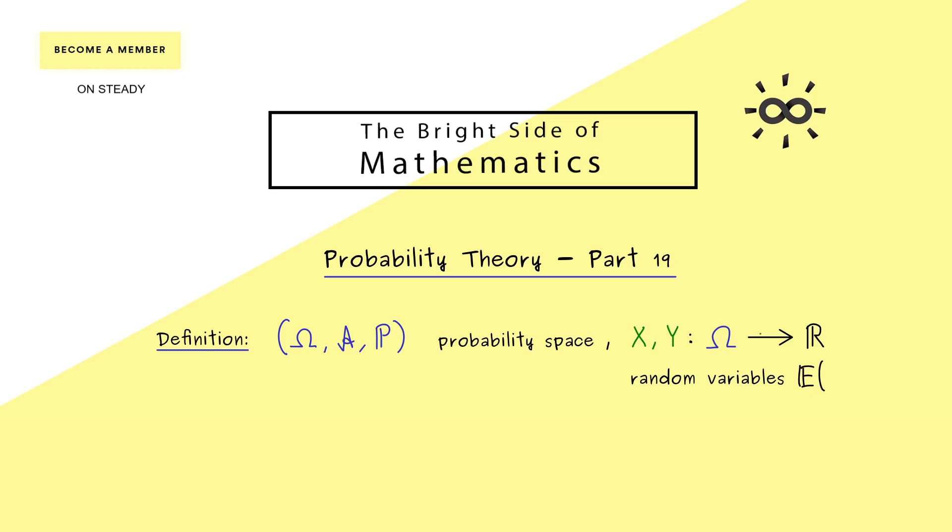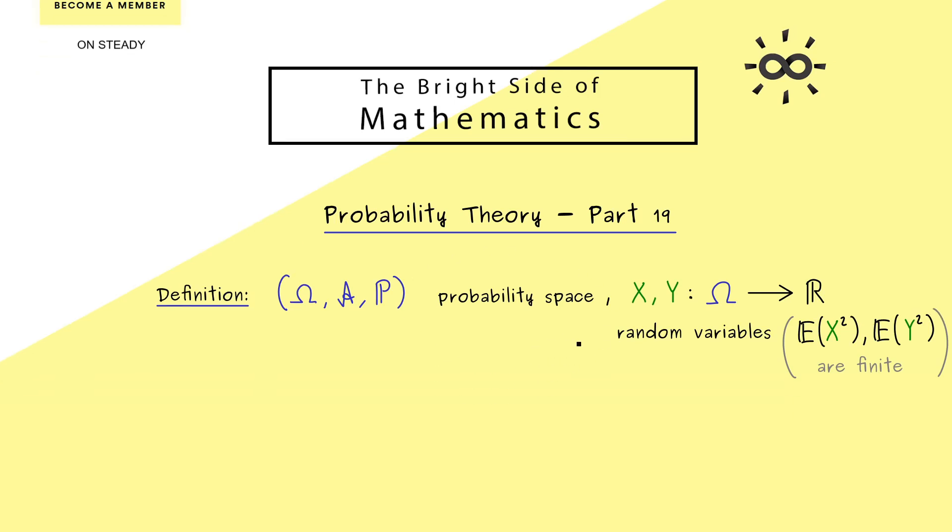However, we have seen it for the variance definition. We also need that the expectation of X squared exists. And obviously, this is even a stronger assumption and we also want that for Y. So in short, these two integrals should exist, so they should be finite. And then, we are able to define the so called covariance of X and Y.